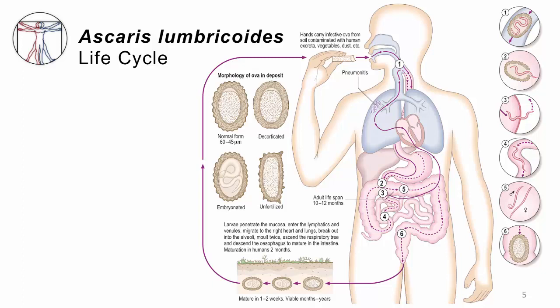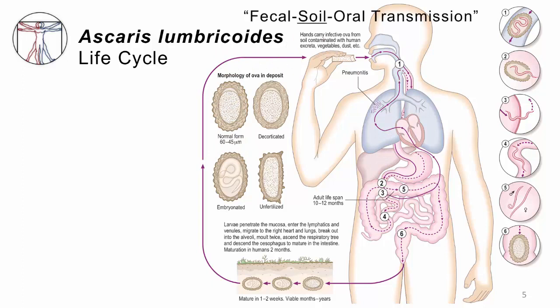Those eggs need one to two weeks to mature or embryonate. When that happens, within each of those eggs there is a single microscopically small larval worm. If someone eats one of those eggs — say they have food, drink, or fingers contaminated with the eggs — they will be swallowed and make their way down into the GI system. For that reason, I would call this fecal-soil-oral transmission, just like Trichuris, the whipworm.